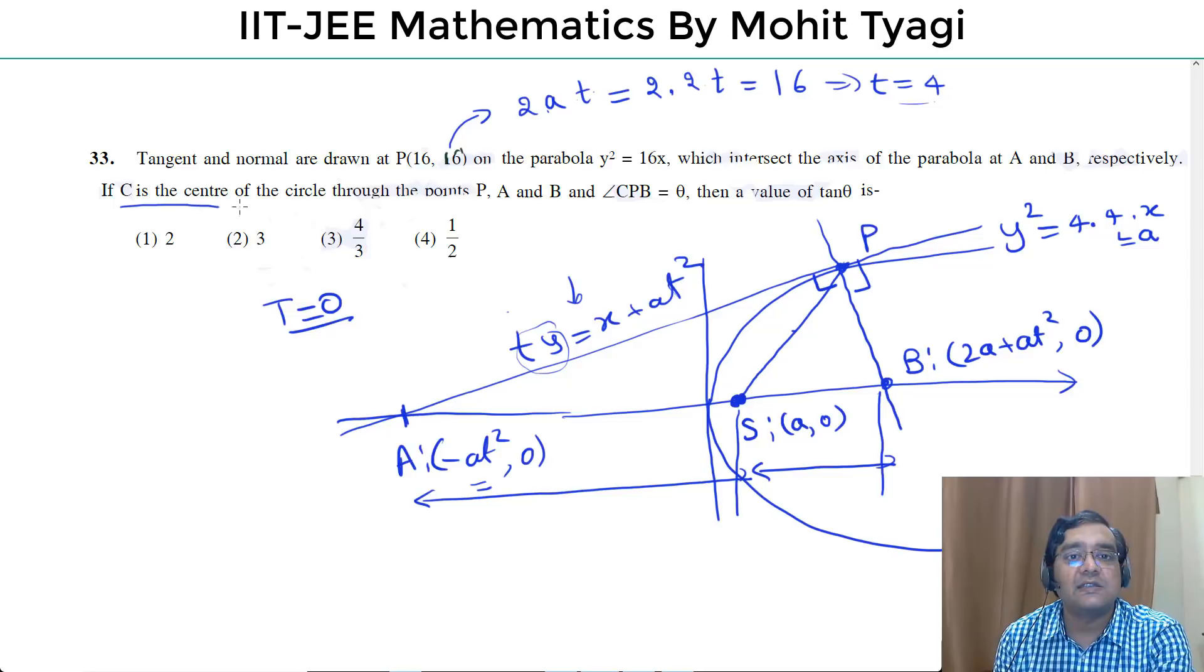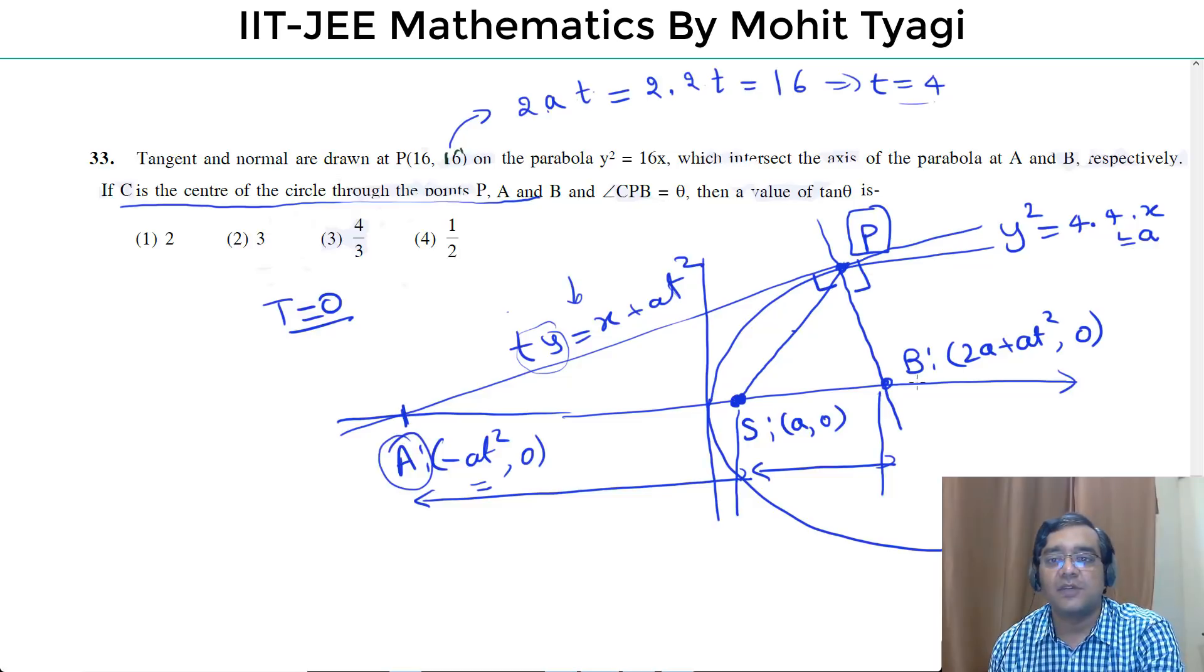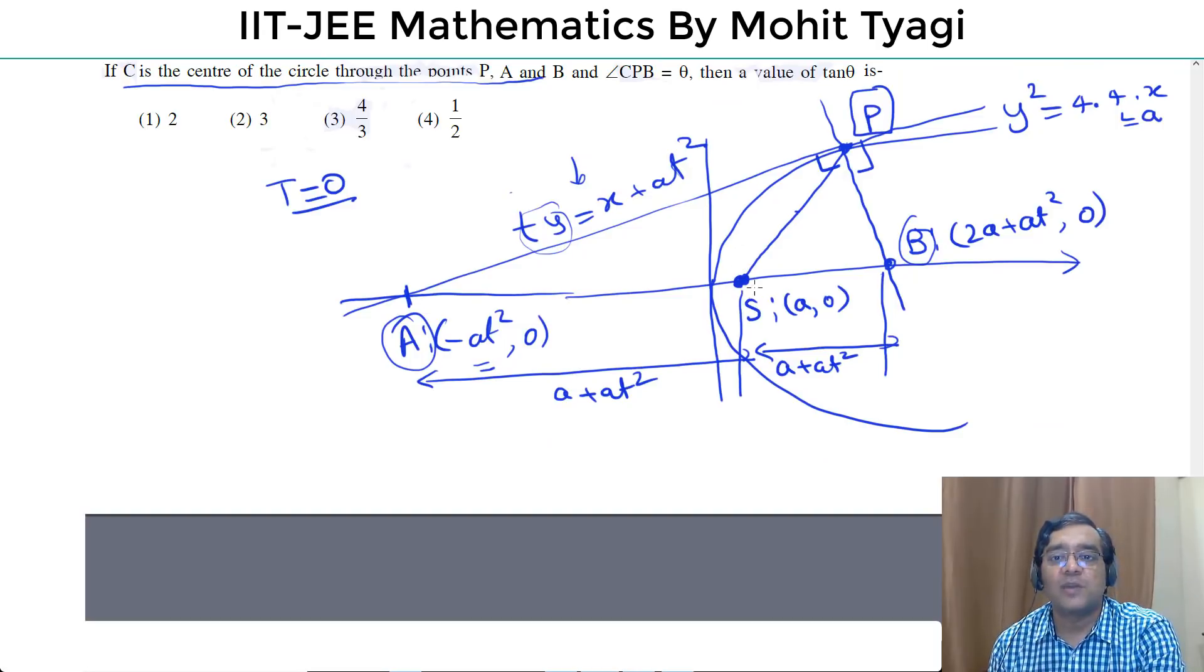It says C is the center of the circle through points P, A, B. This property is a plus at square. This property is focus center. If we can see the result of this property, then we can see the result.